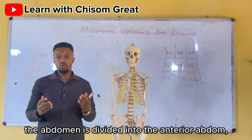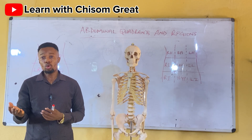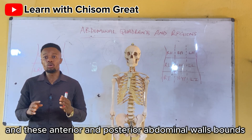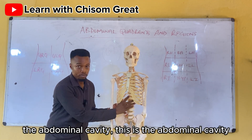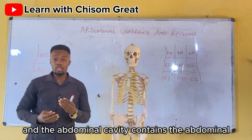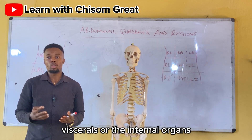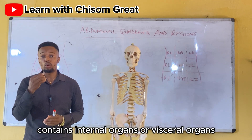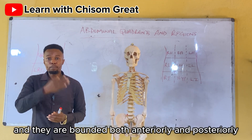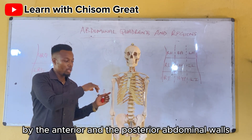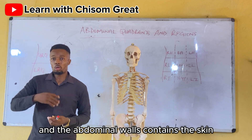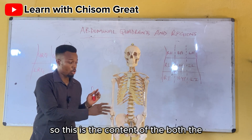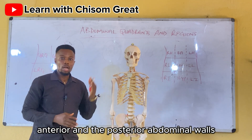The abdomen is divided into the anterior abdominal wall and the posterior abdominal wall. These anterior and posterior abdominal walls bound the abdominal cavity, which contains the abdominal viscera or internal organs. The abdominal walls contain the skin, the superficial fascia and muscles, peritoneum, and the rest.